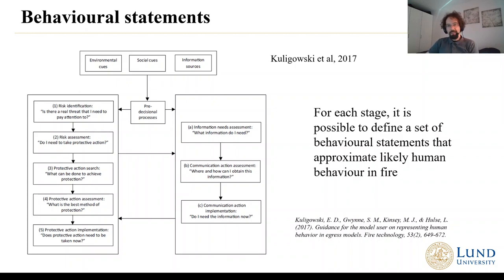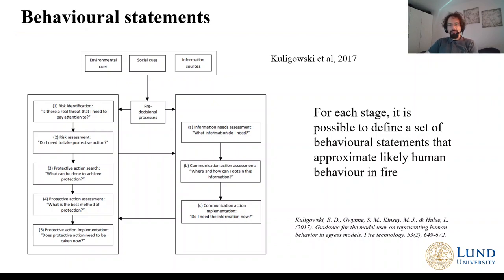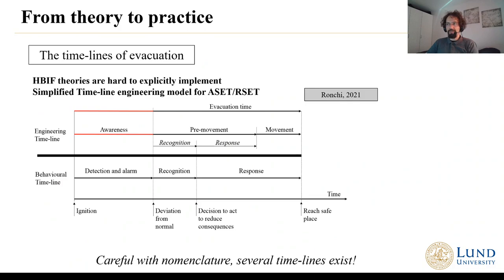Based on the theories presented earlier, we know that it is very likely that people will act in certain ways. An example of a behavioural statement would be: we know that people tend to satisfice rather than optimize — so we are not going to pick the best or quickest possible route, but we will try to pick a route that is good enough to get to safety. There are many statements like this: we know that people tend to move towards familiar places, we know that they are influenced by the action of others, and so on. I really recommend you have a look at this paper, because it gives you quite good guidance to understand what is the expected behaviour that people will have in fire evacuation emergencies.